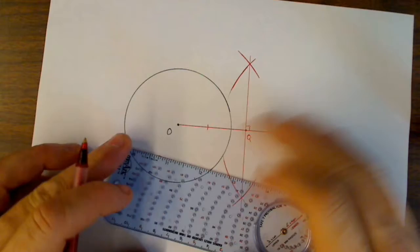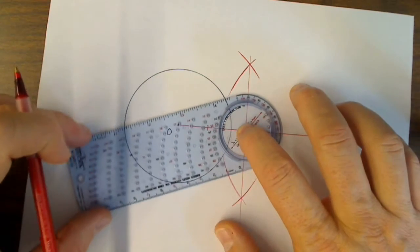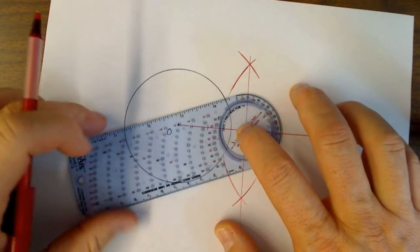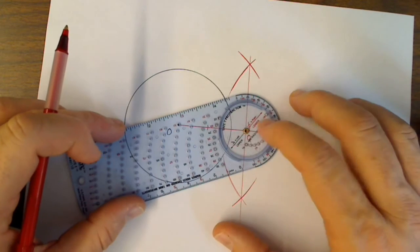Now what I'm going to do is I'm going to measure the distance from Q to O. It looks to me like it's right at 51. If I pull on 51, it looks like it's going to be right there.